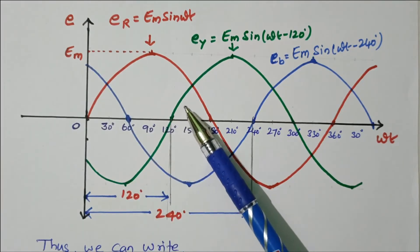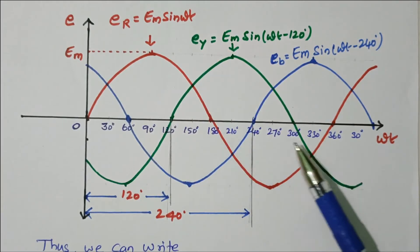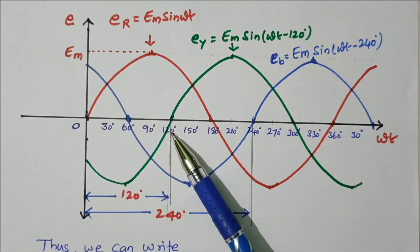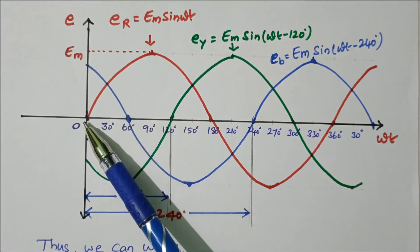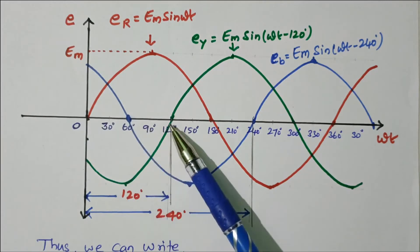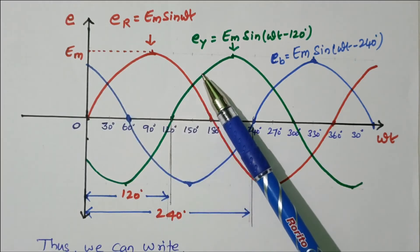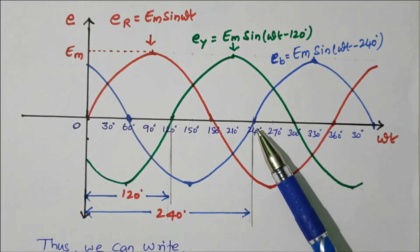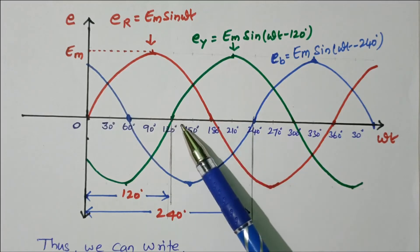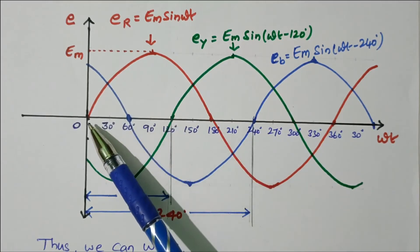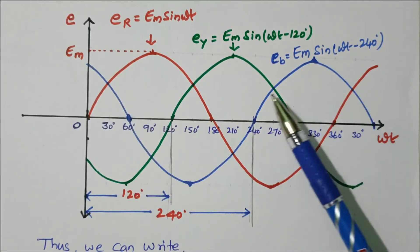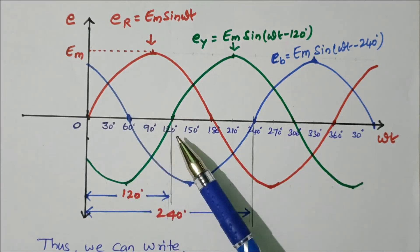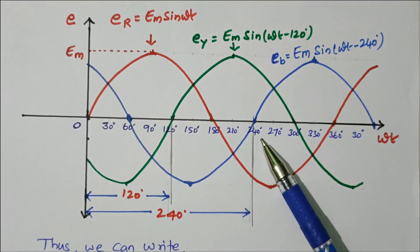The Y phase starts at 120 degrees and follows the same process of increasing and decreasing. Y phase lags R phase by 120 degrees — R starts at 0 degrees but Y starts at only 120 degrees. Then B phase starts at 240 degrees. The phase displacement between B and Y phase is 120 degrees, and between B phase and R phase is 240 degrees.